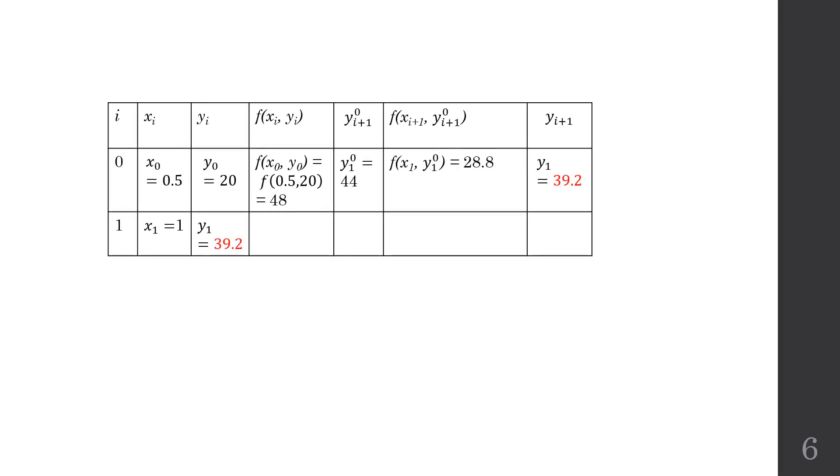So let's update the table. We have calculated just now y1 equal to 39.2. We can bring it down to the second row where x1 is equal to 1, y1 equal to 39.2. So this is what I said just now. This is the value of y1 here corresponds to the x1 equal to 1. The one that we are looking for is actually the value of y at x equal to 1.5.